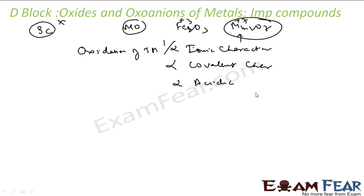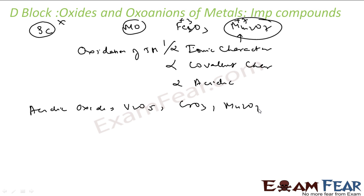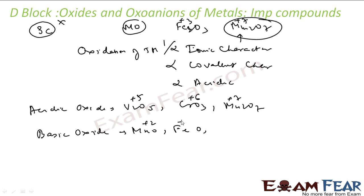For acidic oxides: V₂O₅, CrO₃, and Mn₂O₇ are all acidic oxides — in all these the oxidation states are pretty high. For basic oxides, the oxidation state is pretty low: for example MnO (+2), FeO (+2), VO (+2), and NiO (+2).